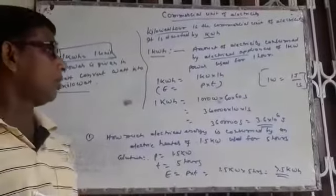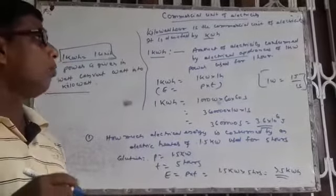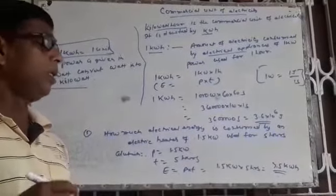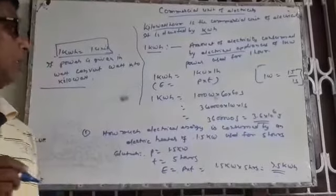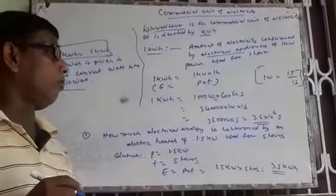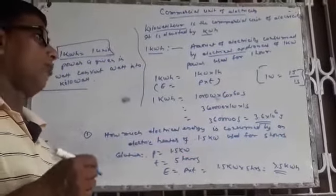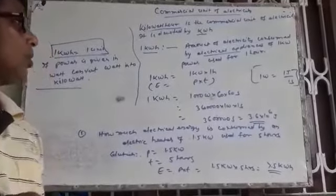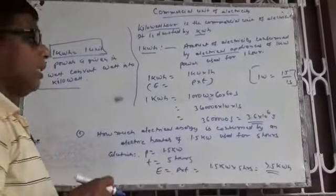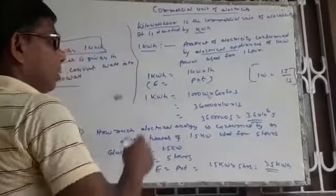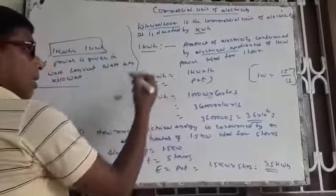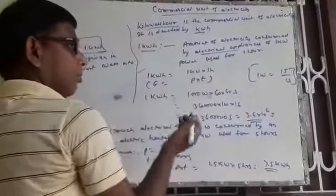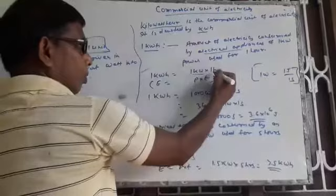There is a maximum chance of using more than one electrical appliance, and the total value should be one kilowatt. So it is mentioned here: either electrical appliances of one kilowatt, or more than one — two, three, four, five — but the total power must be one kilowatt. If they are used for one hour, the energy consumed is one kilowatt hour. So one kilowatt hour is equal to one kilowatt into one hour, meaning one kilowatt power used for one hour.